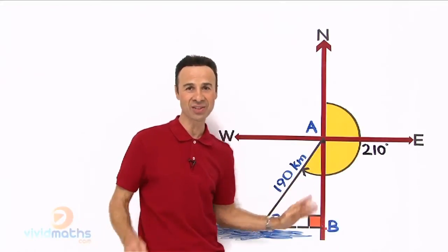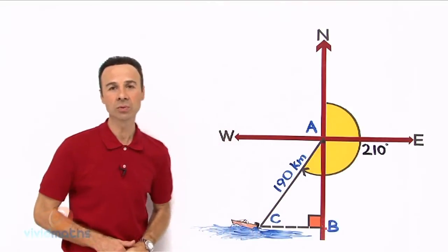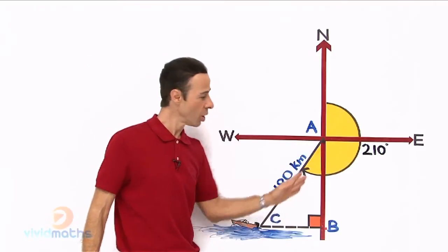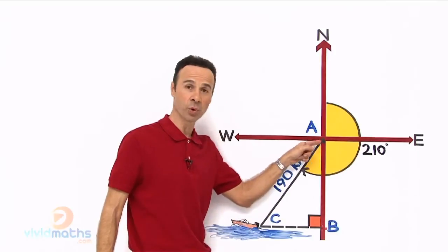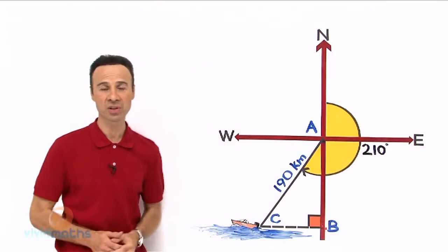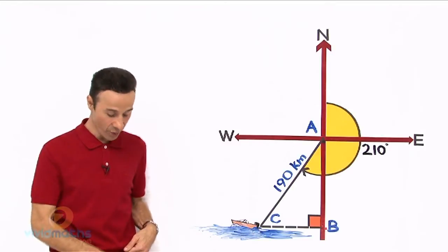We are going to work that out in a second. And then step 2, what we are going to do is work out using trigonometry this triangle here. It is a right angle triangle. We are going to work out specifically from port A all the way down to here how far south that boat has traveled. So let us begin with point number 1, step 1.